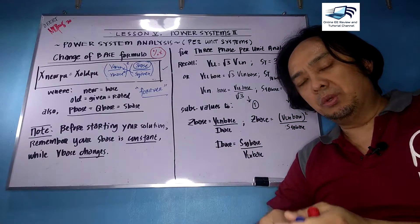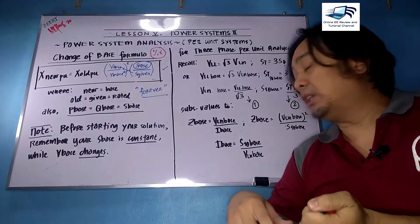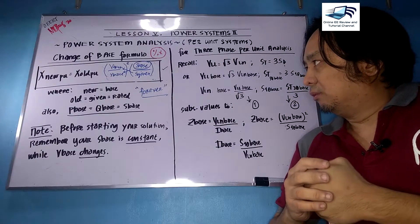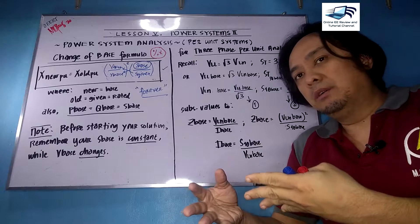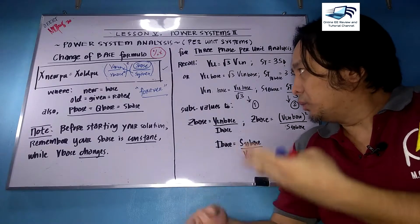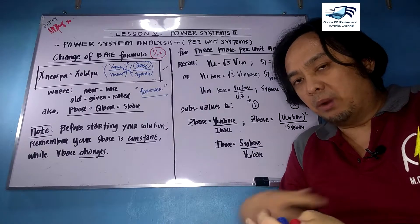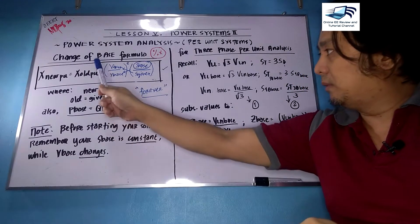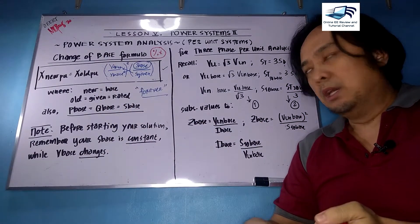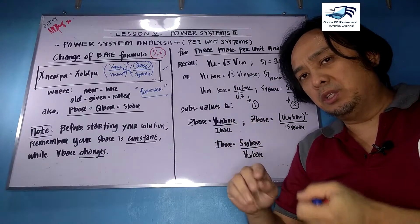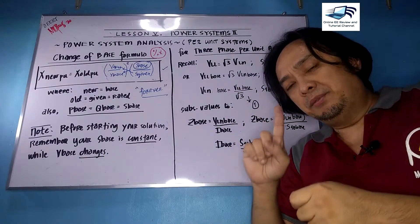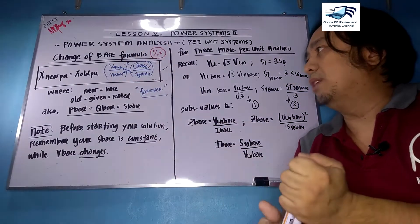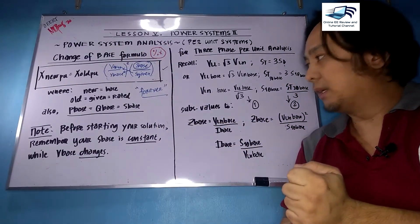Please take note — we will use this when we go to calculations on symmetrical faults, which is another lesson for power system analysis. This is a refresher, but we need it when we model a power system in per unit. You only need to memorize two formulas: the first is per unit equals actual over base, and the second is this change of base formula.